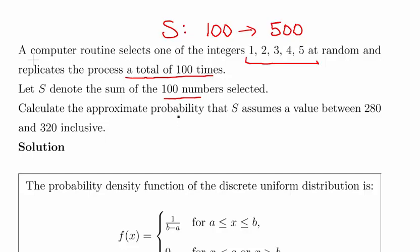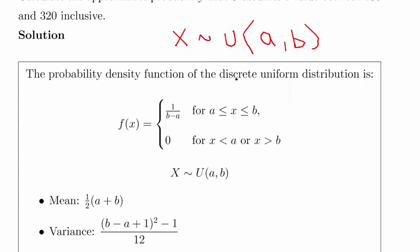The upper and lower bounds: X is a uniform distribution where X is each sample drawn, and a equals one and b equals five. So that's for each particular observation, not the sums. This is the probability density function there, but what we're really interested in here is the mean and the variance.